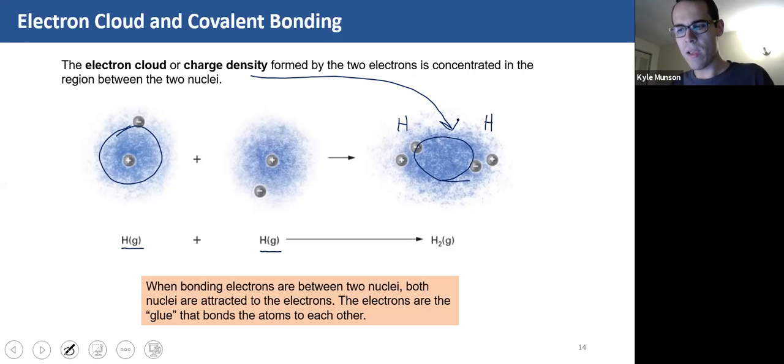Between these hydrogen atoms when they come together to form a covalent bond. So when bonding electrons are between two nuclei, both nuclei are attracted to the electrons. So in that sense, the electrons are like the glue that bonds the atoms to each other. They're sticking the atoms together.